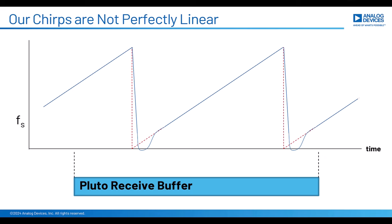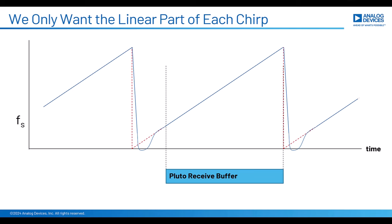That's not good because all of our equations have been with the understanding that this would be a purely linear ramp. This nonlinear portion has a different relationship with distance, so it just ends up putting extra junk into our FFT plot. That junk doesn't have any meaning to us. It's not distance as we represented distance on the plot. So given this nonlinearity, what we really want is for our Pluto buffer to only capture the linear portion of the ramp. If we could do that, it'll help to clean up our range plots.